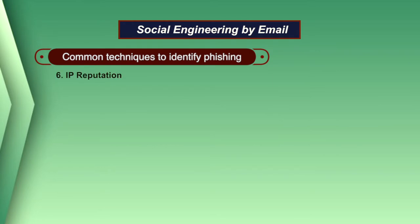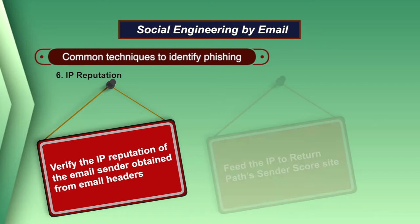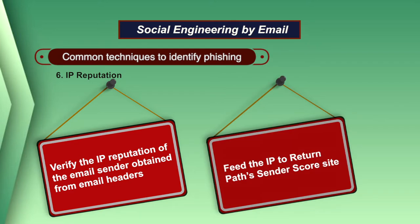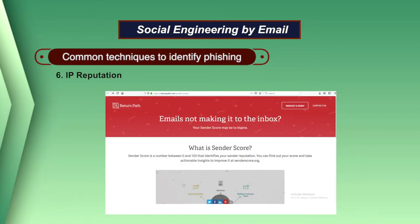Another technique to identify a phishing attack is to check IP reputation. Verify the IP reputation of the email sender obtained from email headers. Feed the IP to the Return Path Sender Score site. This tool will produce a score on a scale of 0 to 100, giving insight into the sending IP's historical performance. The lower the score, the more likely the email is a phishing or spoofing attempt.